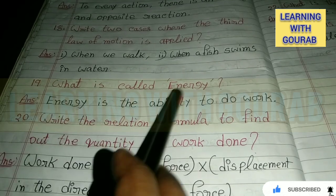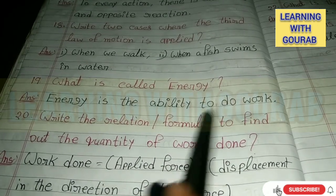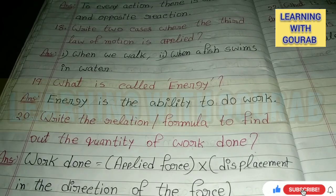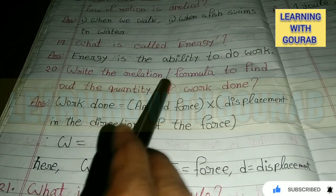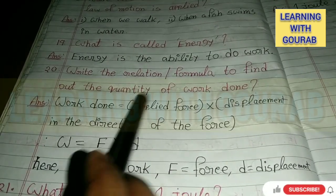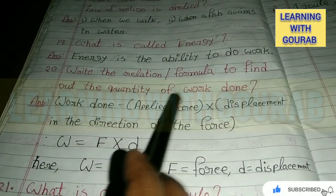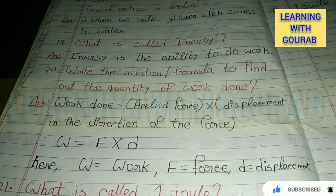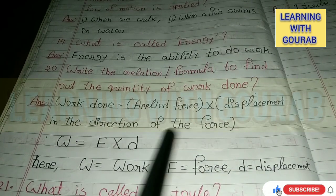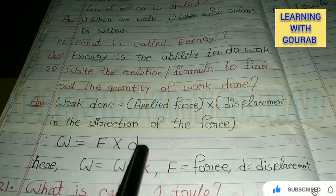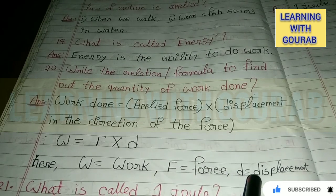Next question: What is called energy? Answer: Energy is the ability to do work. Next: Write the relation or formula to find out the quantity of work done. Answer: Work done equals applied force multiplied by displacement in the direction of the force, or W = F × D, where W equals work, F equals force, and D equals displacement.